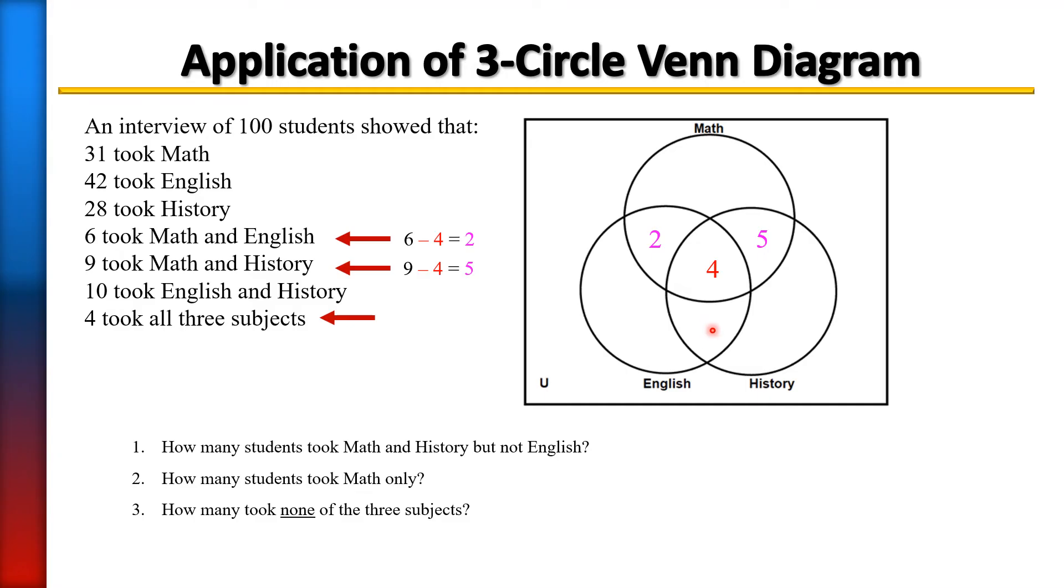Next, we're going to focus on the English and history region. We can see that 10 students took English and history. So once we take 4 from that, 10 take away 4, that's going to give us 6 people in that region.